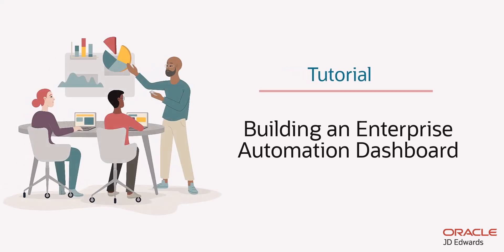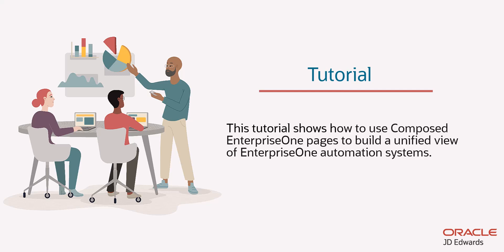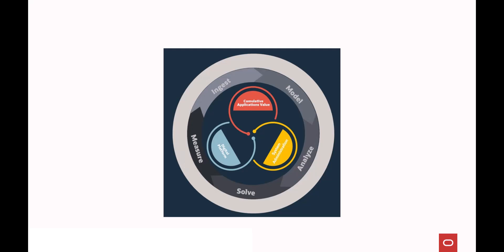Hello, this tutorial shows how to use Composed Enterprise 1 pages to build a unified view of Enterprise 1 automation systems. Enterprise 1 automation is the collection of JD Edwards Enterprise 1 features targeted at getting better data into the JD Edwards system and getting better insights out of the data.